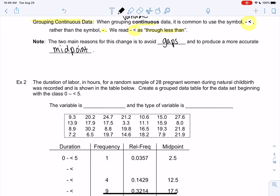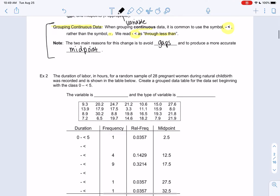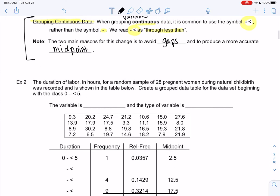All right, let's jump into another example. The next one will be continuous data. Continuous data uses this new symbol, read as less through less than, which is a bit unusual.